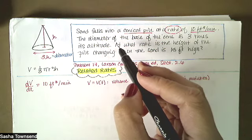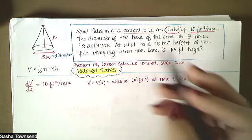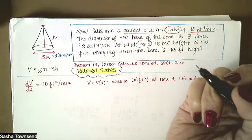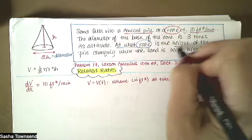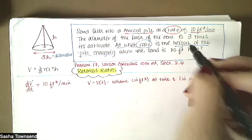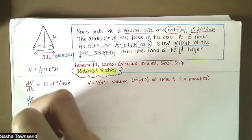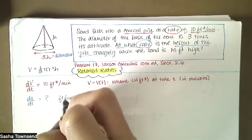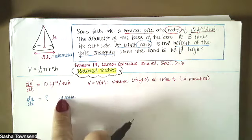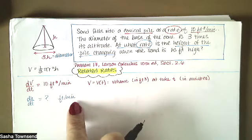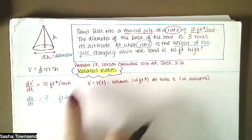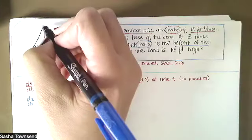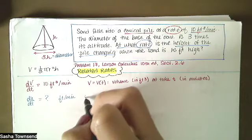In the next part we're asked a question: at what rate is the height of the pile changing? So I'm looking for dH/dt. Because our volume was measured in cubic feet per minute, our height will be measured in feet, and our change in height with respect to time will be in feet per minute. When the sand is 15 feet high, our height H equals 15.